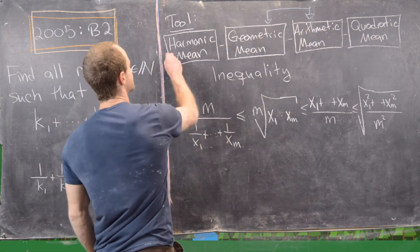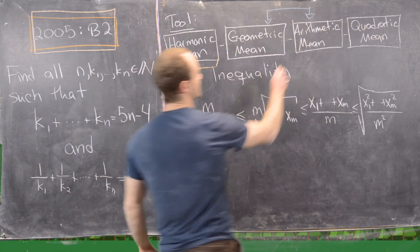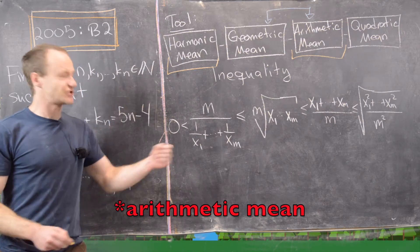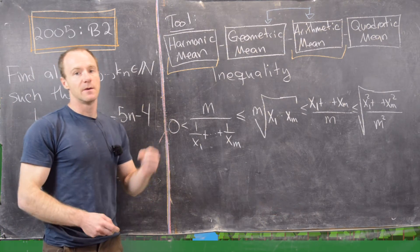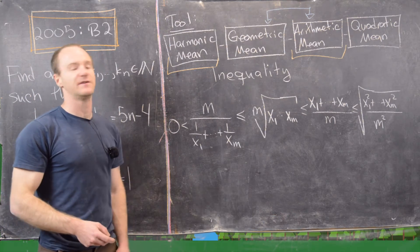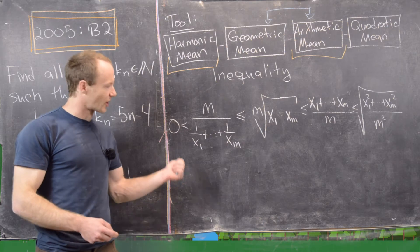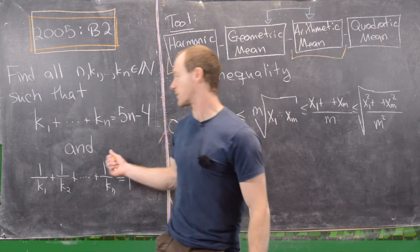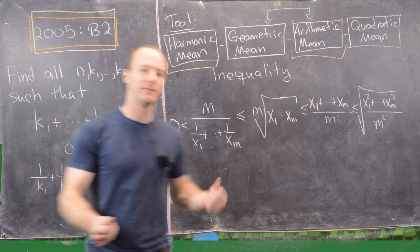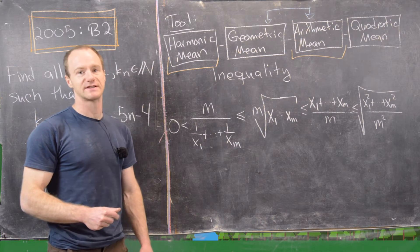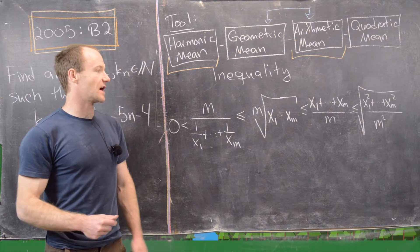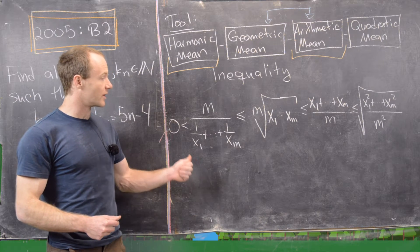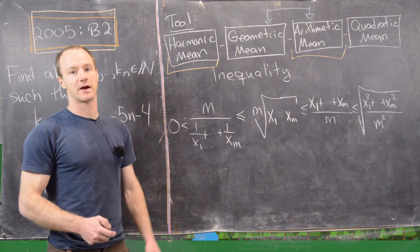After seeing the harmonic-geometric-arithmetic-quadratic mean inequality, it's pretty obvious what you're going to use: the harmonic mean part and the geometric mean part. I urge you to pause the video right here after seeing this major tool and see if you can solve the problem, and maybe put in the comments if you were able to solve it.